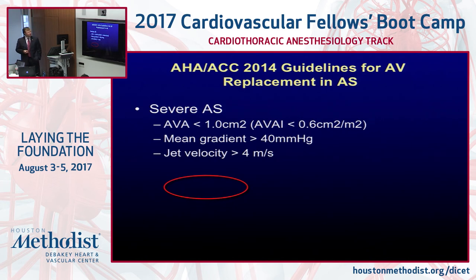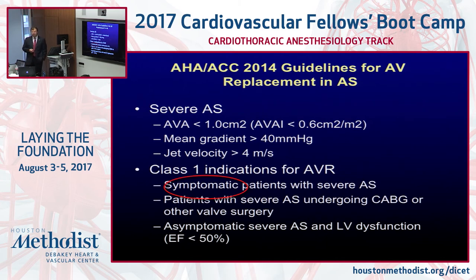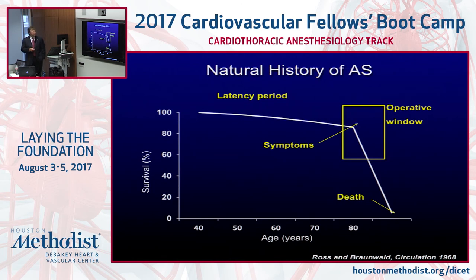The AHA/ACC guidelines for aortic valve replacement in AS: severe AS is defined as aortic valve area less than 1 cm², mean gradient greater than 40 mmHg, and jet velocity greater than 4 m/s. Class I indications for AVR include symptomatic patients with severe AS, patients with severe AS undergoing CABG or other valve surgery, and even moderate AS patients undergoing CABG should be considered for concurrent valve replacement. Asymptomatic severe AS with any evidence of LV dysfunction is also an indication for surgery.